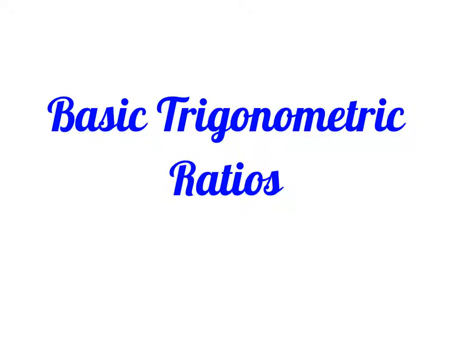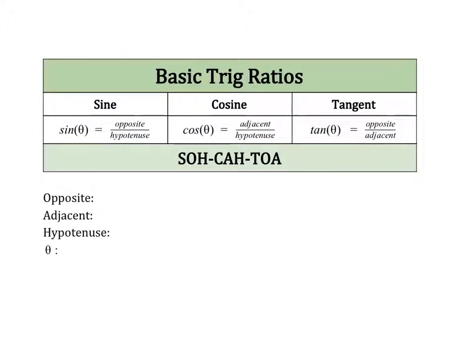Hi everybody, today we are going to talk about basic trigonometric ratios. There are three basic trig ratios that we are going to talk about and they are called sine, cosine, and tangent.